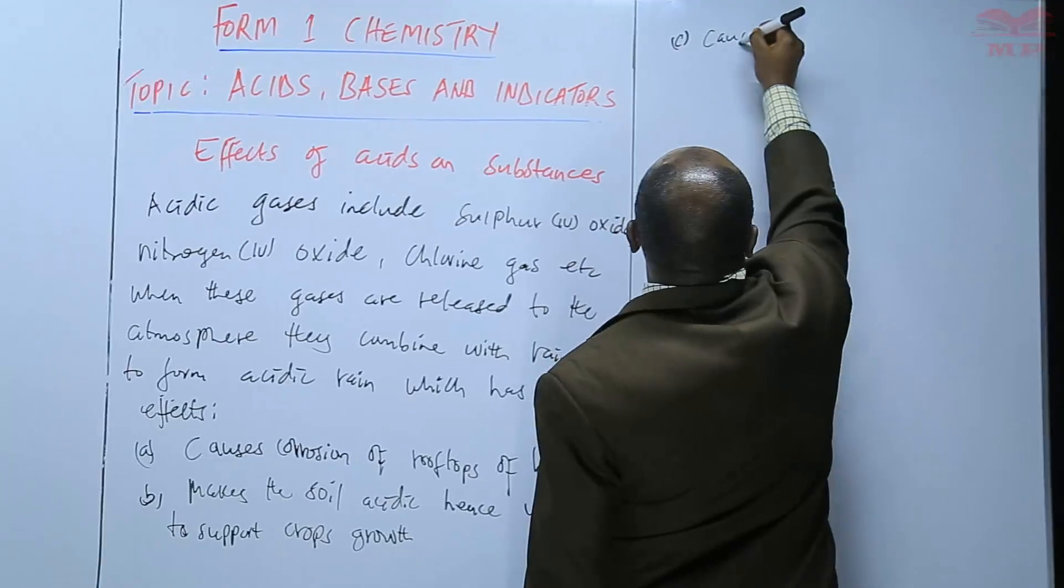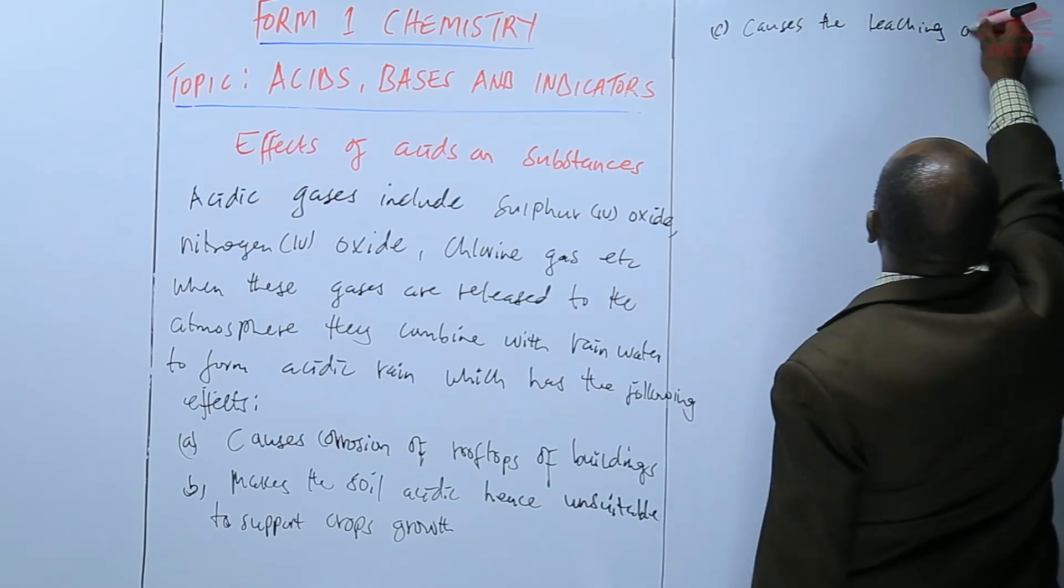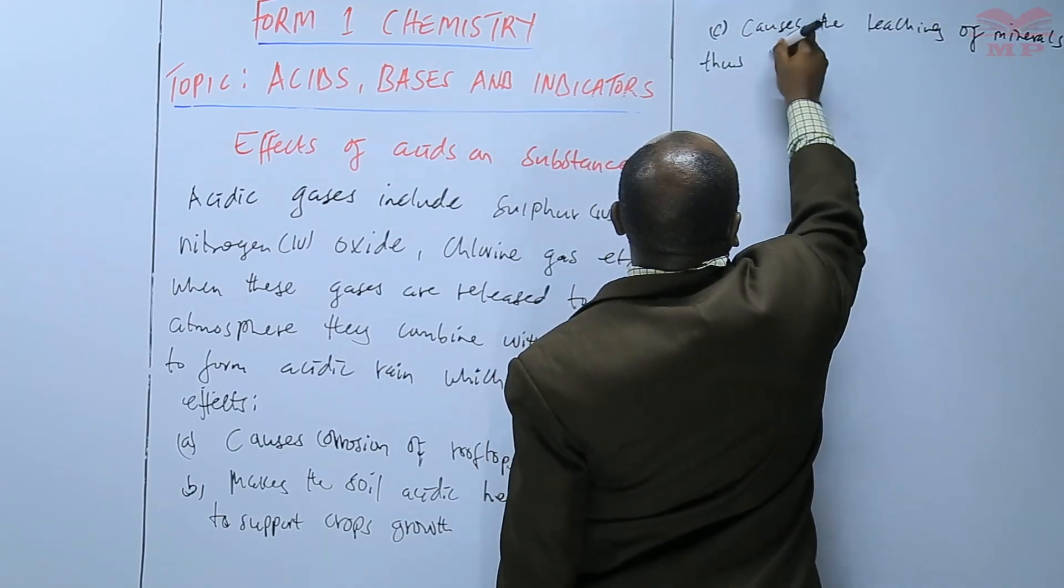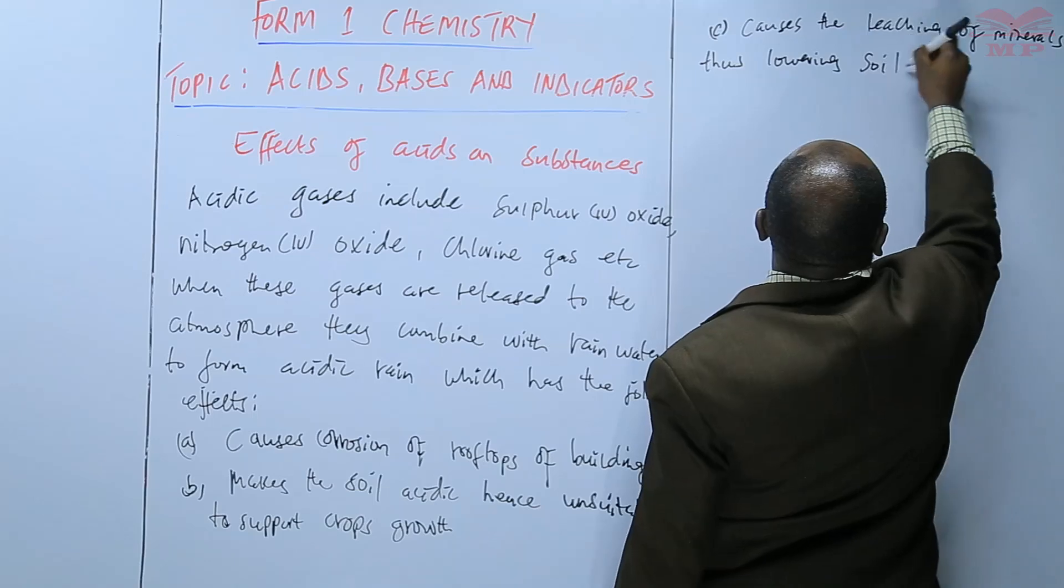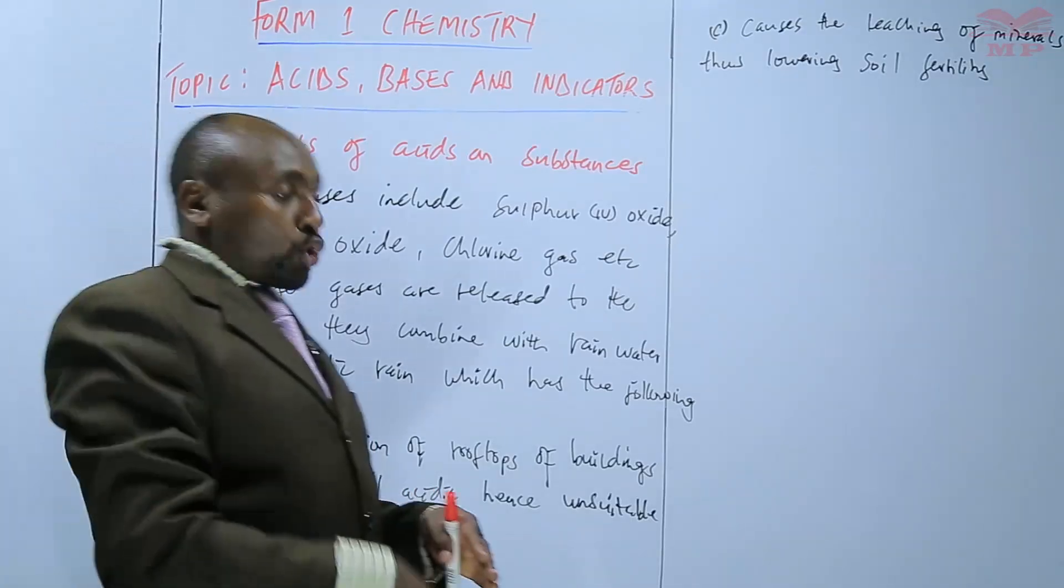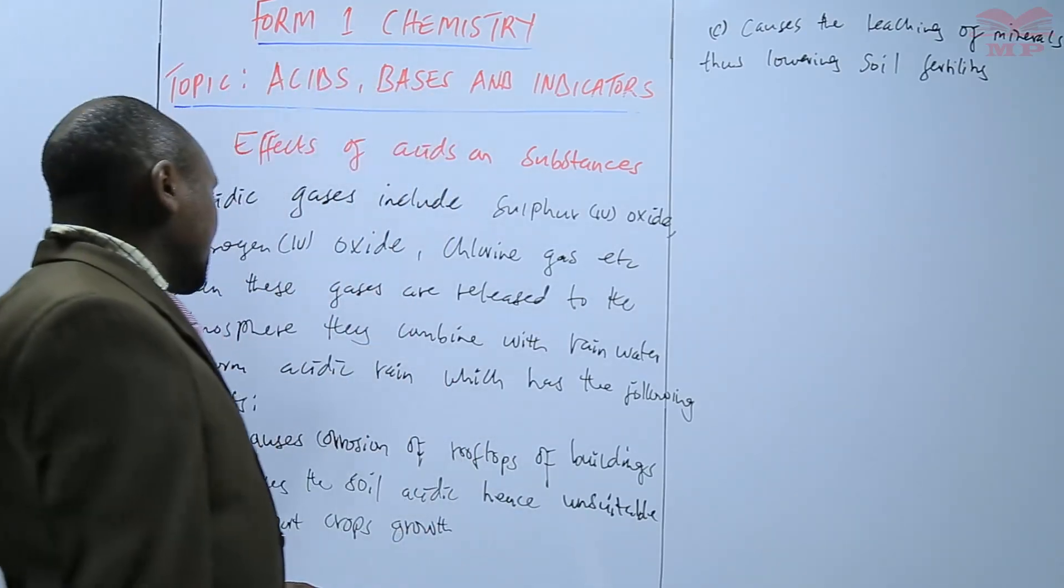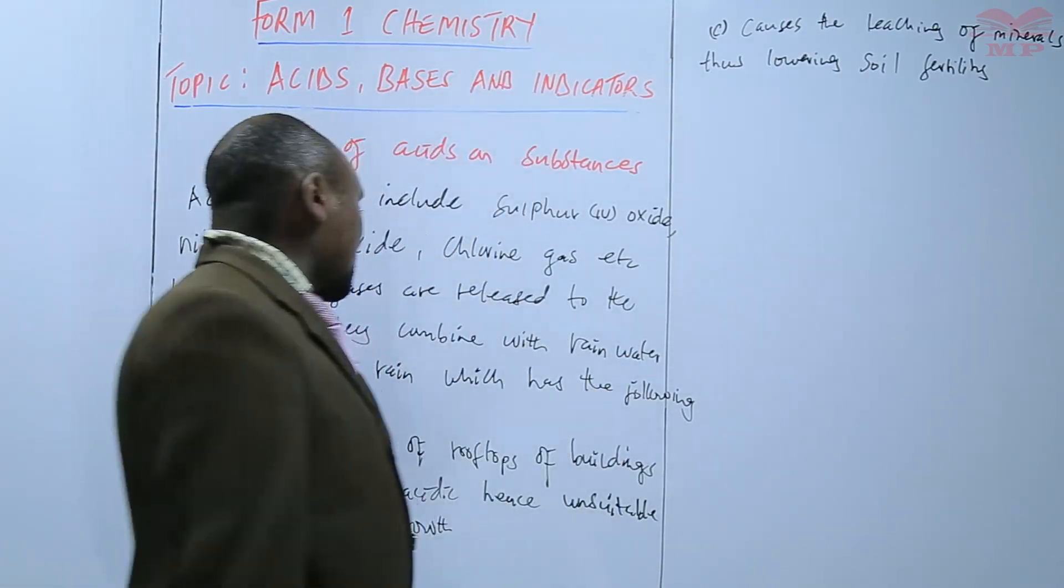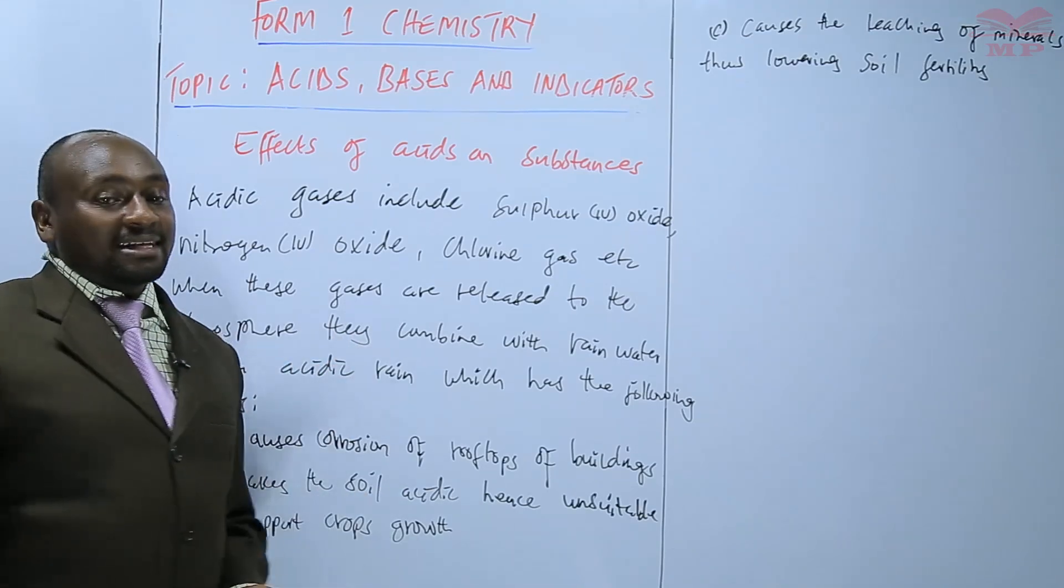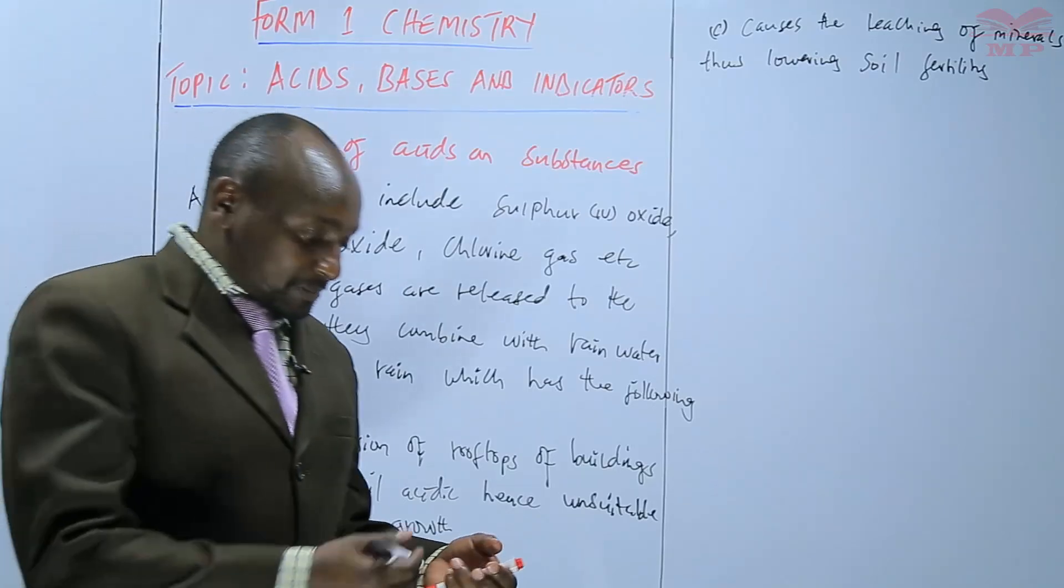It also causes the leaching of minerals, thus lowering soil fertility. When the minerals are leached deep down into the soil, or they are washed deep down, the soil fertility is compromised. All these are some of the effects that come as a result of the acidic rain. And this acidic rain comes from the acidic gases that are released to the atmosphere by industrial processes.